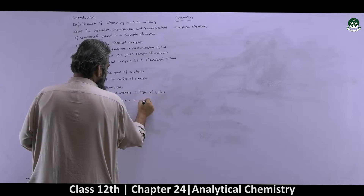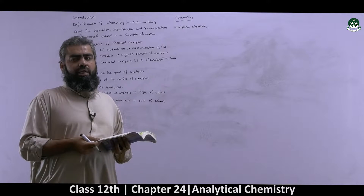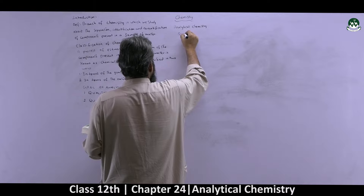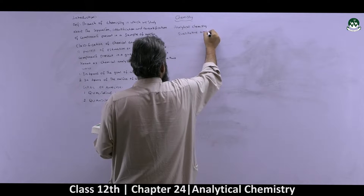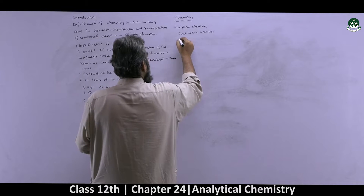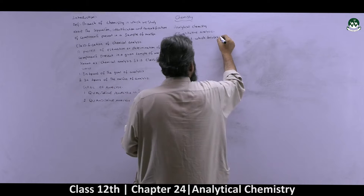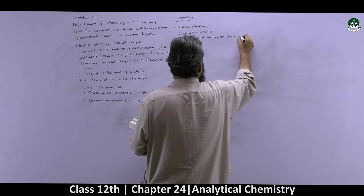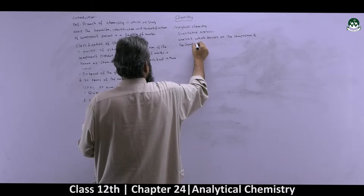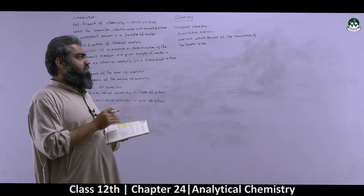In quantitative analysis we talk about the number of atoms — the quantity. In qualitative analysis you try to find out what kind of atoms are present in the sample. Let us give the heading: qualitative analysis. It is the analysis which focuses on the composition of a given sample — which components and type of atoms may be present. This is what we call qualitative analysis.